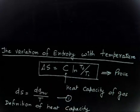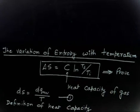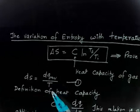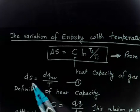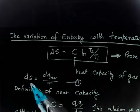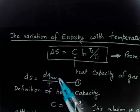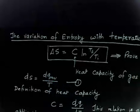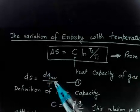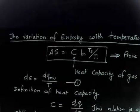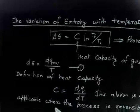Let us go for that derivation. We have already stated that dS is given by dQ_reversible divided by T. This is the definition of entropy change. Although dS is a state function, I have to take dQ_reversible so that I can easily measure it. Measuring dQ_reversible is a slightly difficult task, and that is why we take dQ_reversible divided by T.